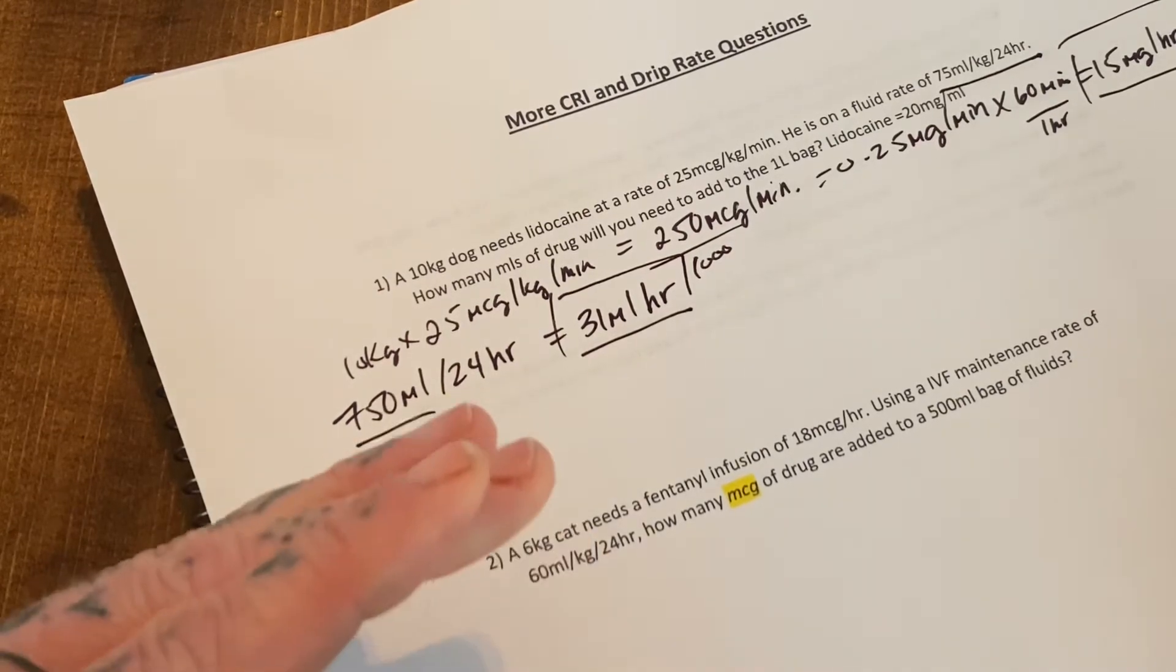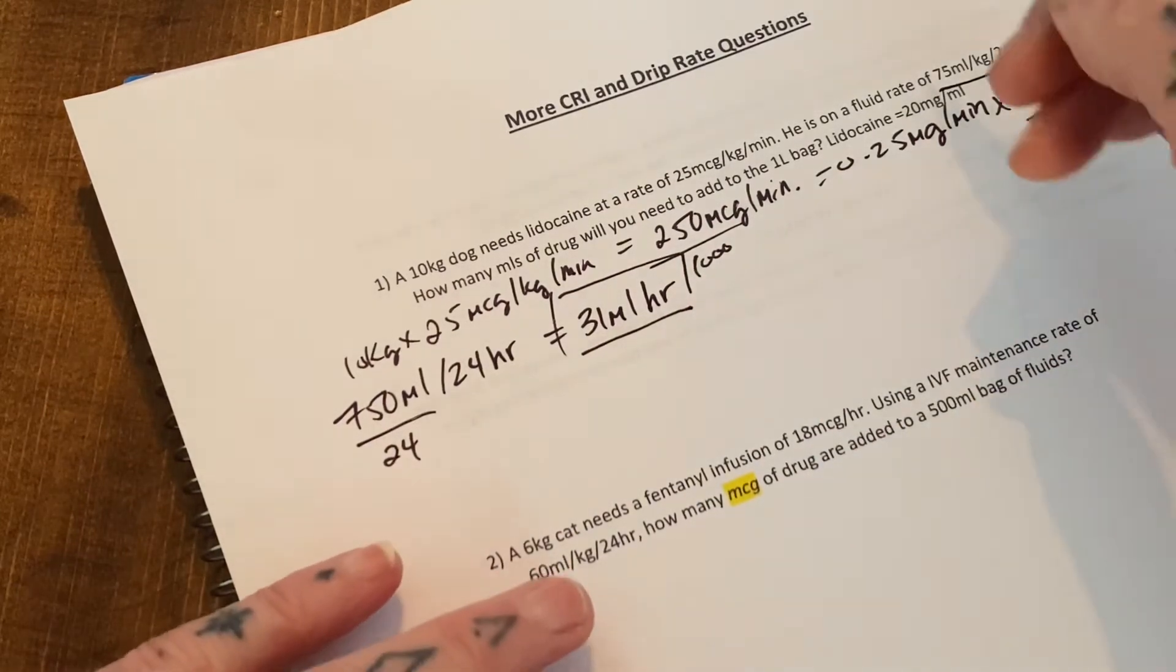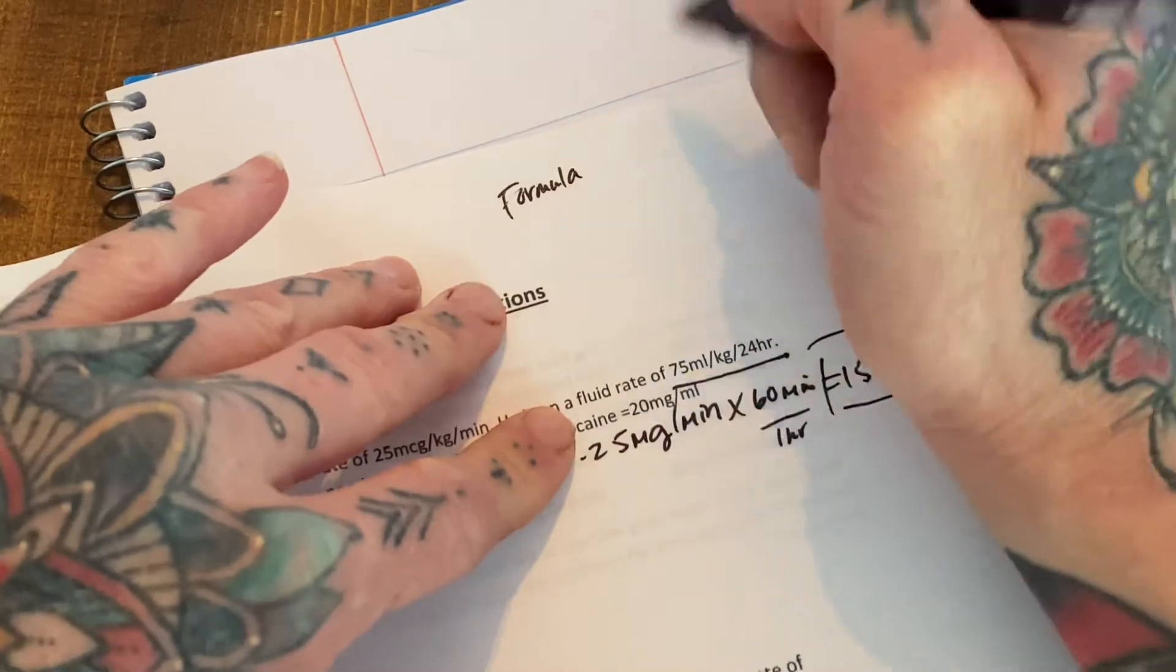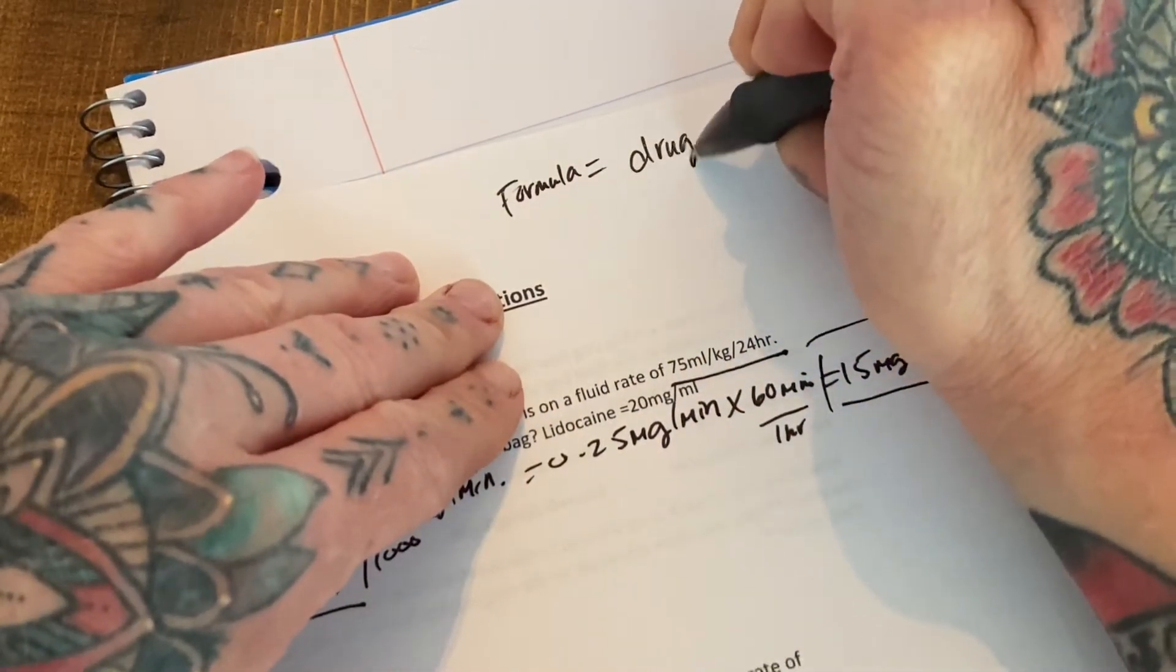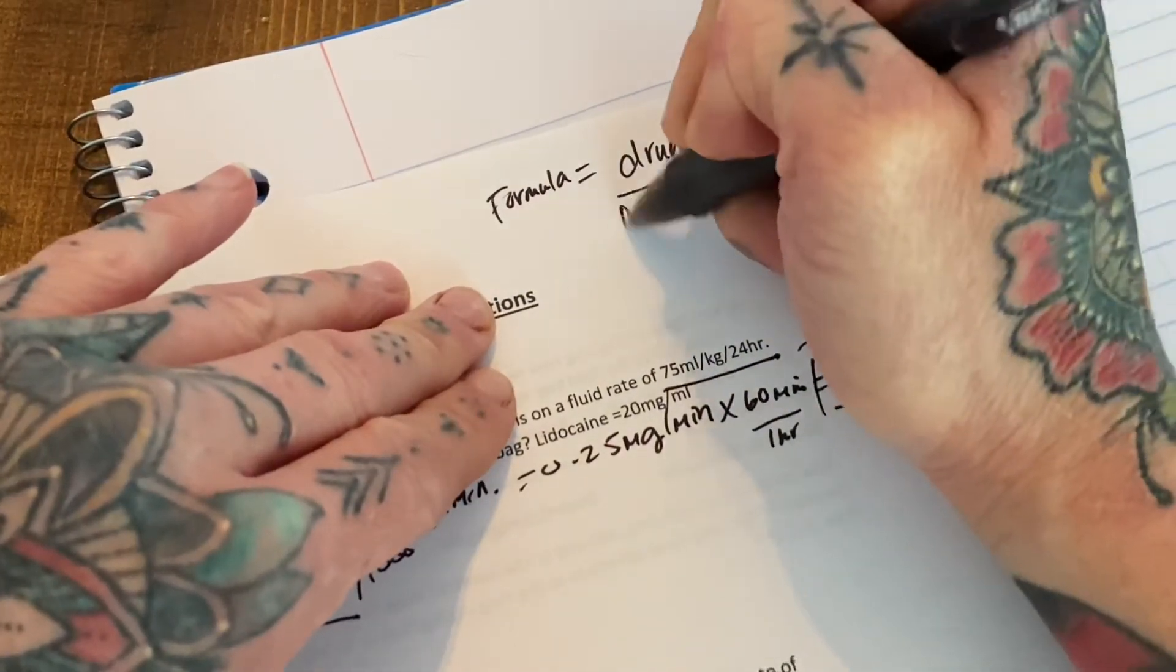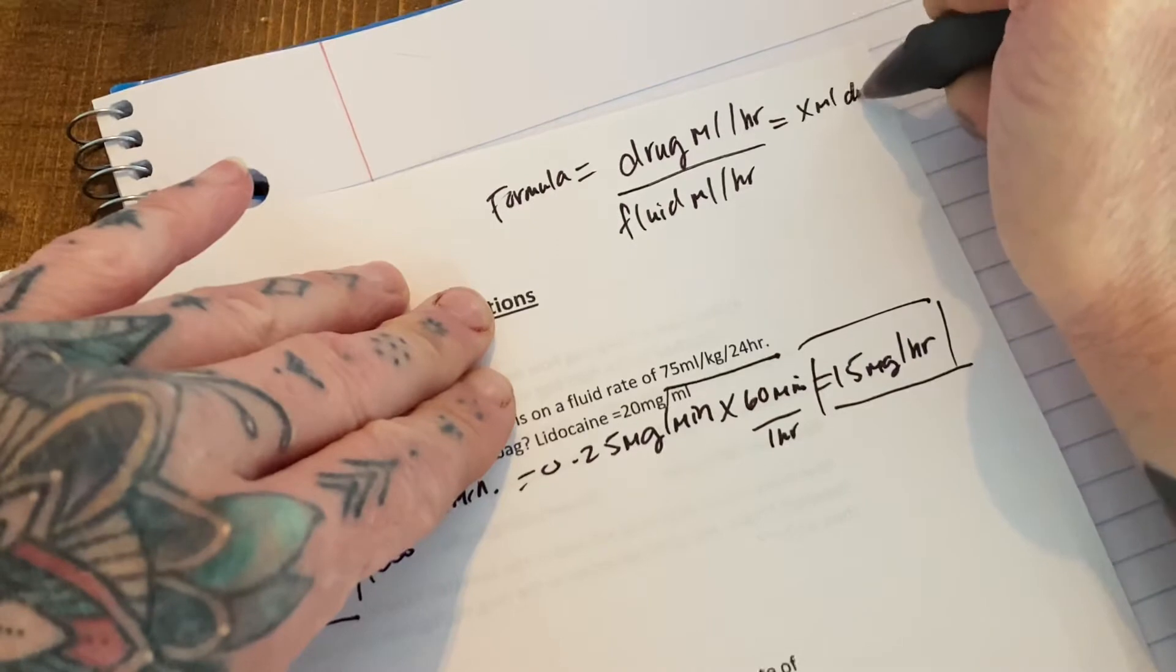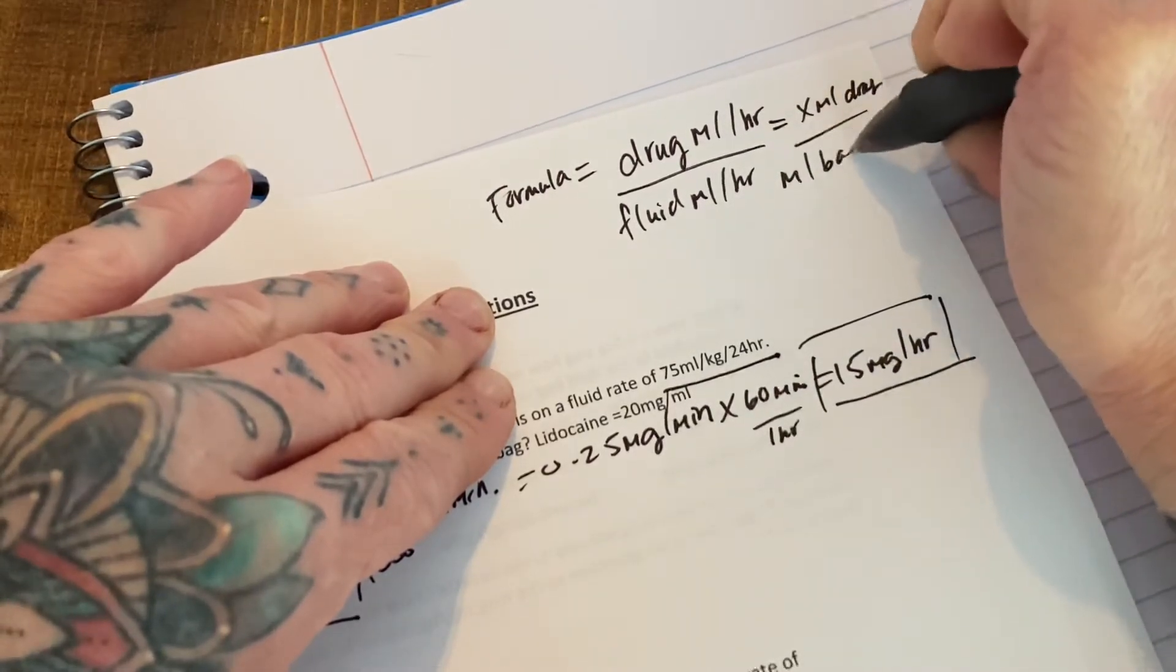I have it memorized now, but I've had it written on pieces of paper in my little cheat sheet book. The formula is, as long as everything's in the same units, it always makes sense. So it is drug in mils per hour over fluid rate in mils per hour equals X mils of the drug over the mils, whatever is in the bag or burette. So then you can just punch in your numbers.